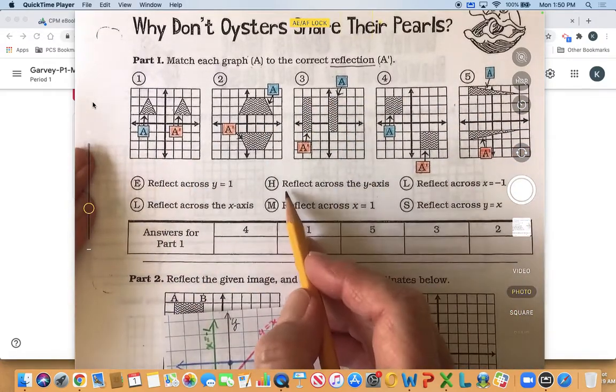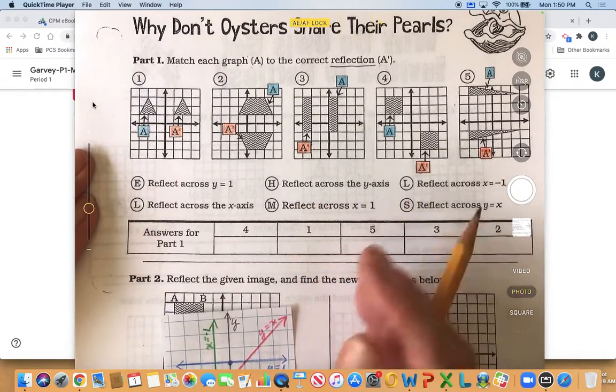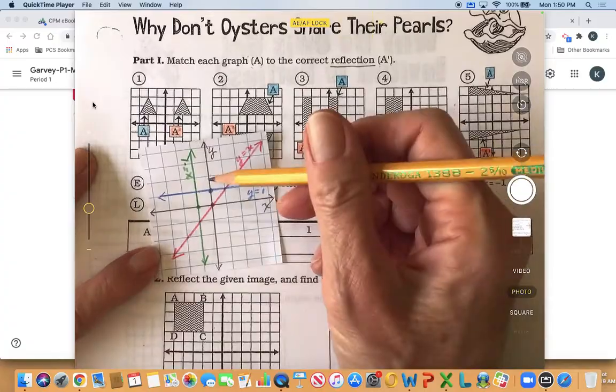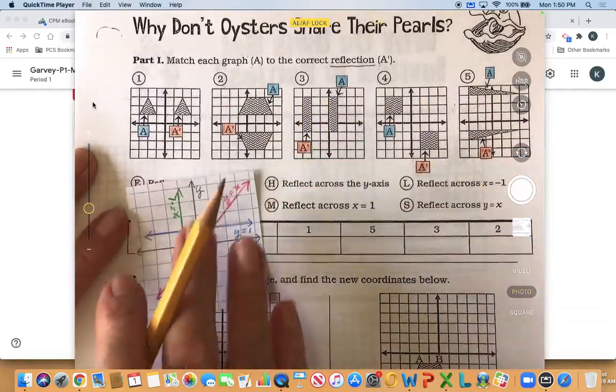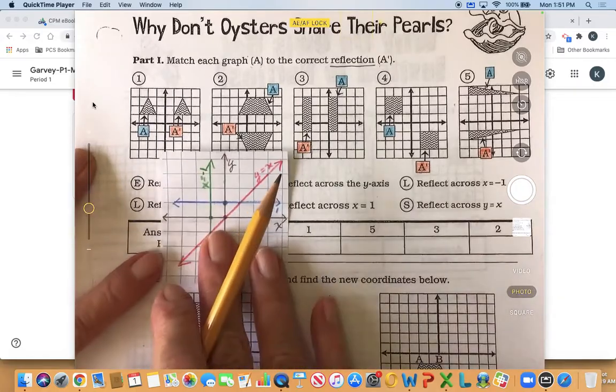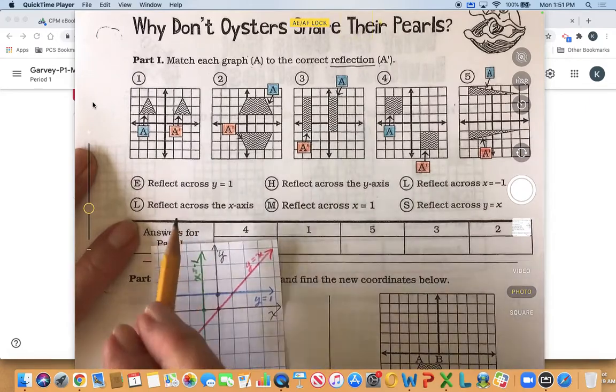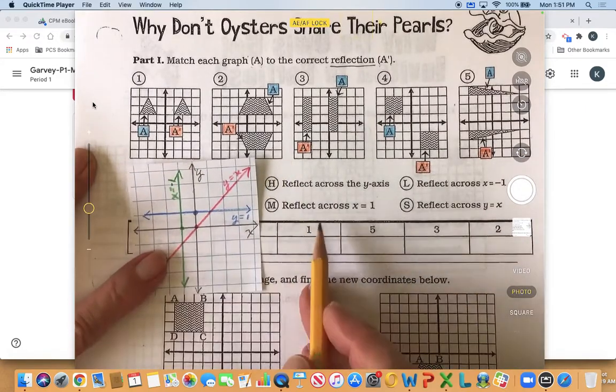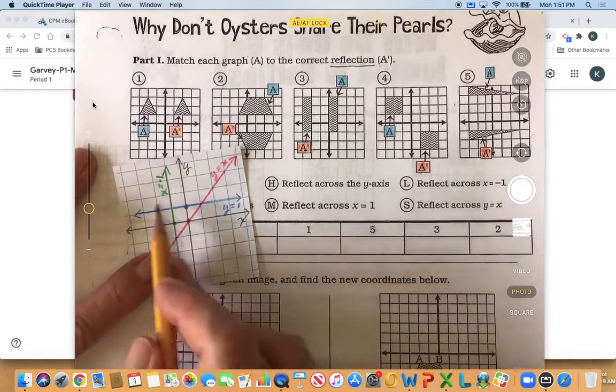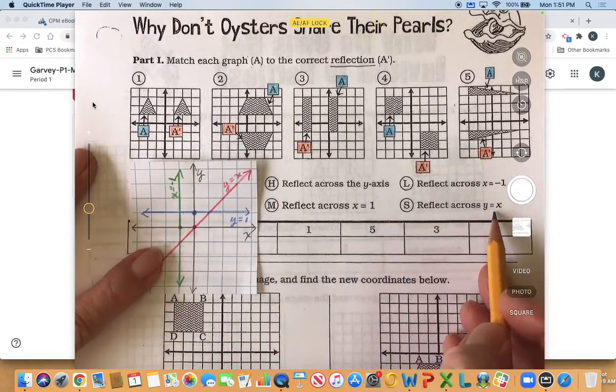And then some of the other things or possibilities are reflect across the y-axis and of course we know where that is that's right here that's the y-axis. And reflect across x equals negative one so I've drawn that one also reflect across the x-axis we know where that is reflect across x equals one that's the blue line.